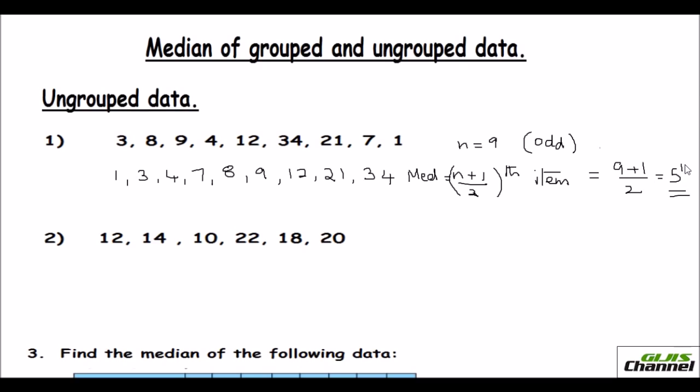So it is the fifth number which you are going to choose. So from here, just count the fifth number. It is 1, 2, 3, 4, 5. So your median is 8. Therefore, your median is 8 there.